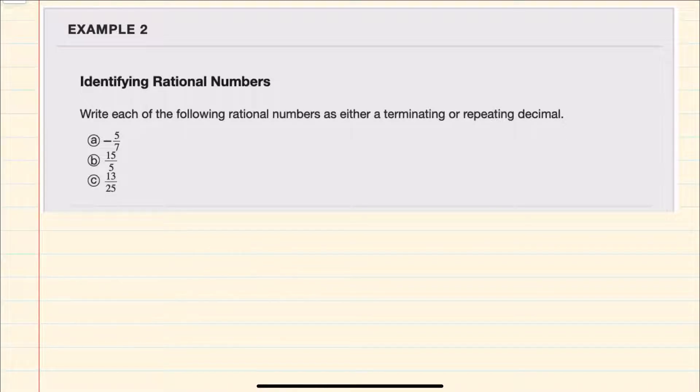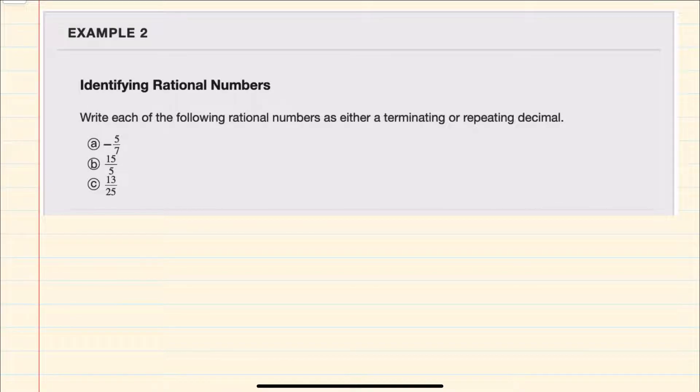In this video, I'll be helping you with the math topic called identifying rational numbers as seen in the OpenStax College Algebra second edition text. We're asked to write these rational numbers as either terminating or repeating decimals.